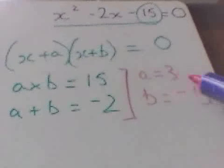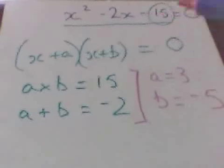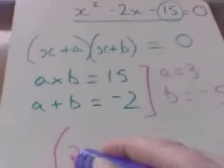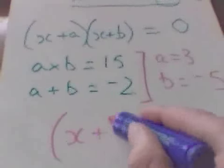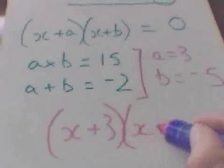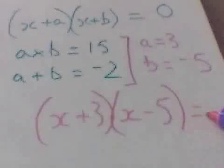Now, this is where you think 3 times negative 5 is negative 15. But if we put those into our brackets now, we've got x plus 3, x take 5 equals 0.